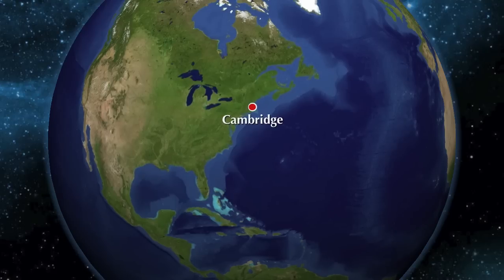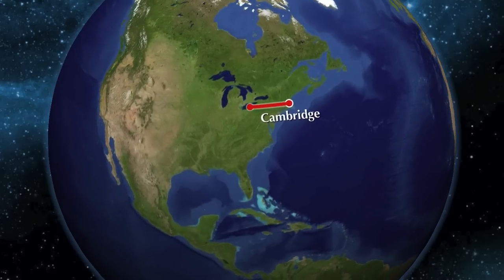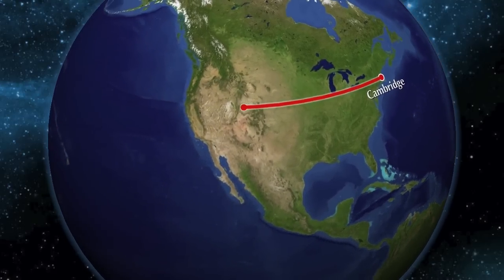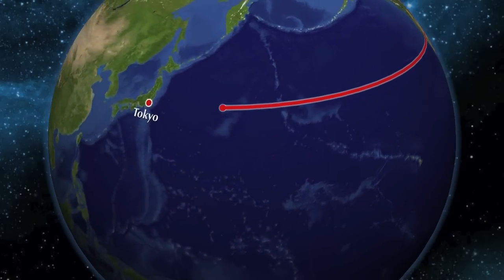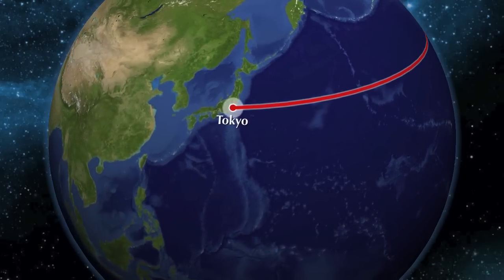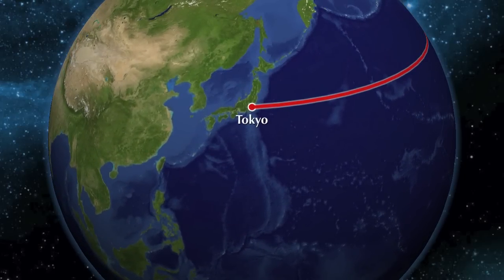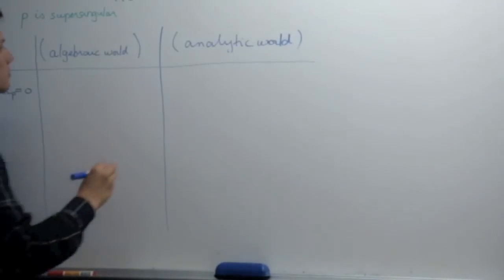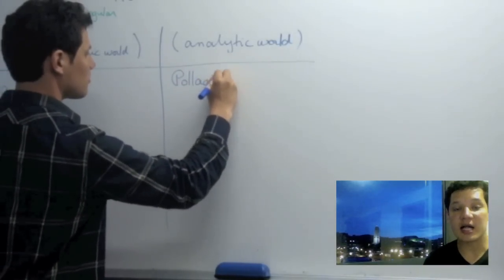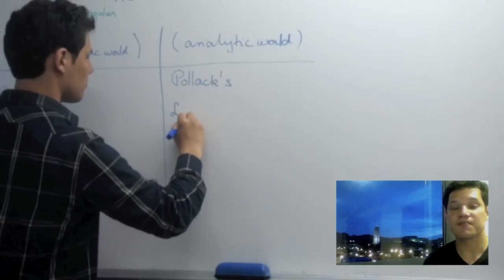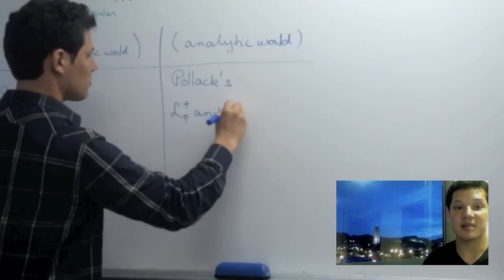Robert Pollack, who was then a grad student at Harvard in Cambridge, Massachusetts, found the analytic objects, while Shinichi Kobayashi, who was then a grad student at the University of Tokyo in Tokyo, Japan, found the algebraic ones. Robert Pollack called his analytic objects Lp plus and Lp minus. What are those Lp plus and Lp minus?